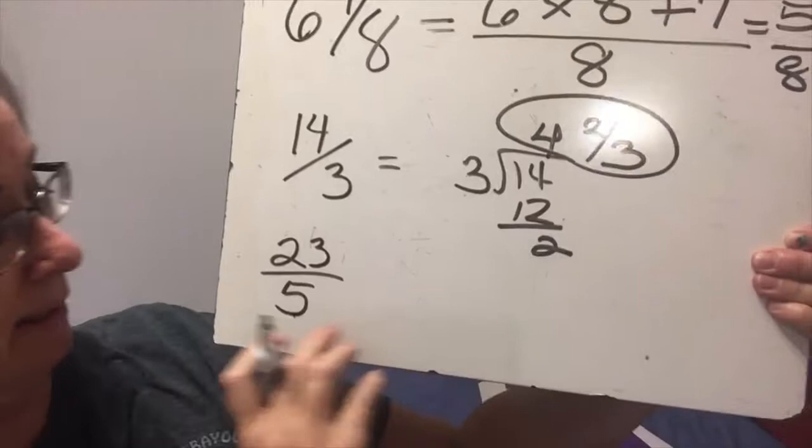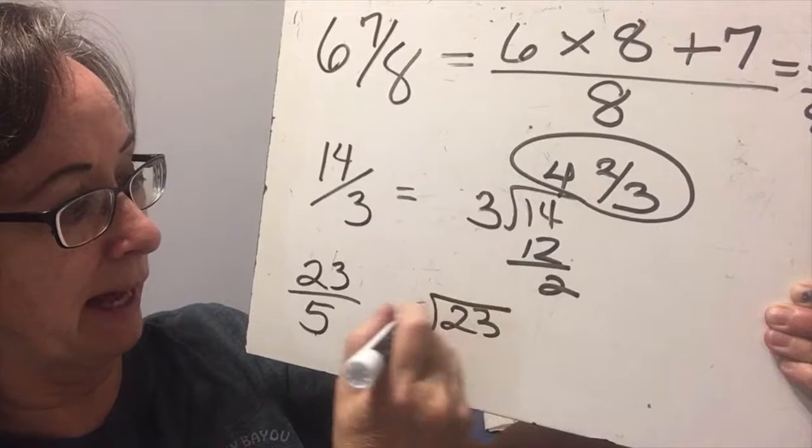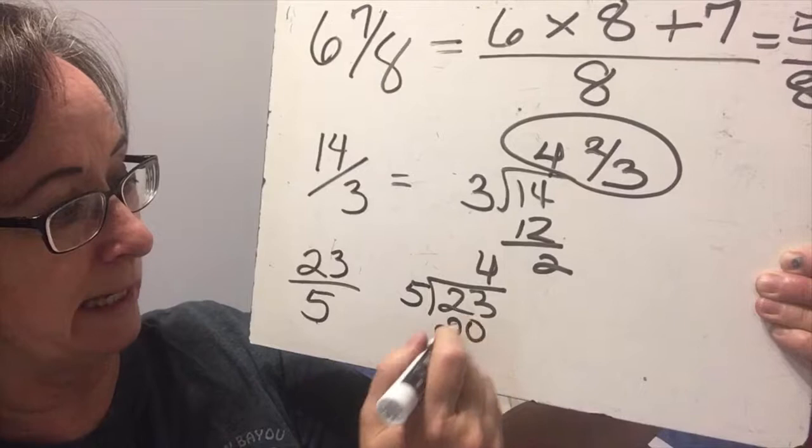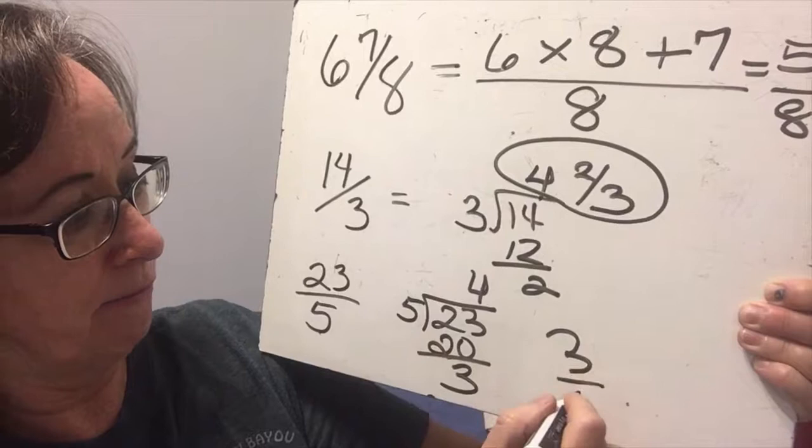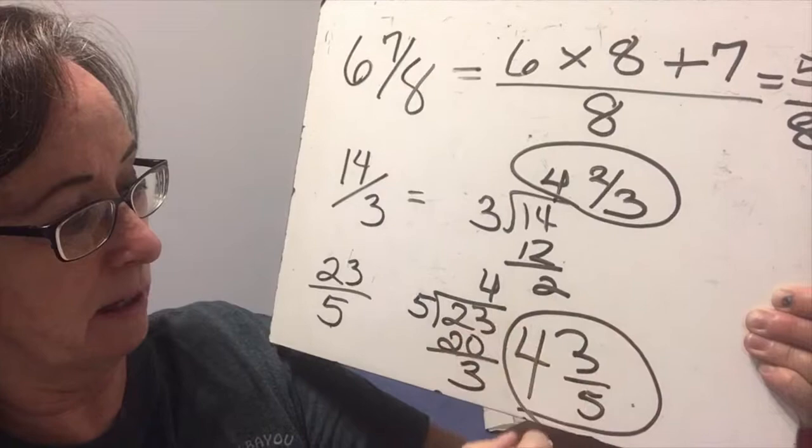And the last one is 23 fifths. So we will divide 23 divided by 5. And that's going to go in 4 times. 4 times 5 is 20 with a 3 remainder. So 3 divided by 5 is our fraction. So we're going to have 3 fifths onto the 4. So 4 and 3 fifths would be the mixed number that is equivalent to 23 fifths.